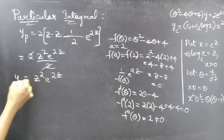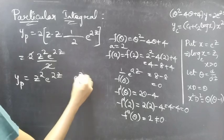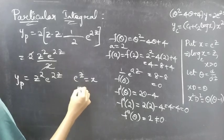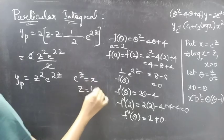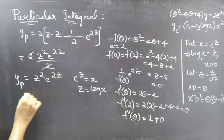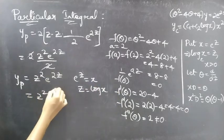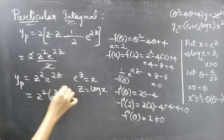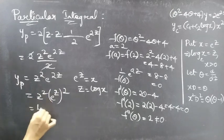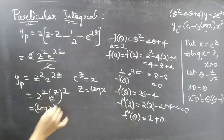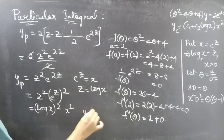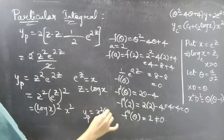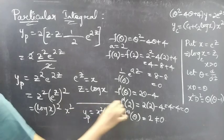We have yp in terms of z; we need to write it in terms of x. By replacing e^(2z) as (e^z)², then replacing z by log x and e^z by x, we get yp equals x²·(log x)².